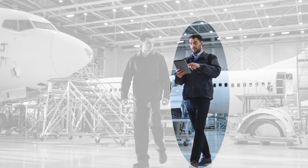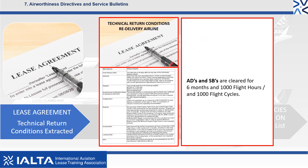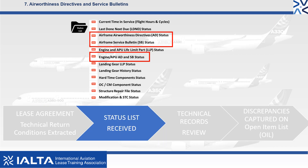Part of your role as the technical records consultant will be to review the AD and SB list from the re-delivery airline. The high-level process involves extracting and becoming familiar with the relevant technical return conditions from the lease agreement. Typical return conditions would be the ADs and SBs are cleared for 6 months, 1,000 flight hours, and 1,000 flight cycles. The starting point of the AD and SB review is when you receive the certified status list from the returning airline.